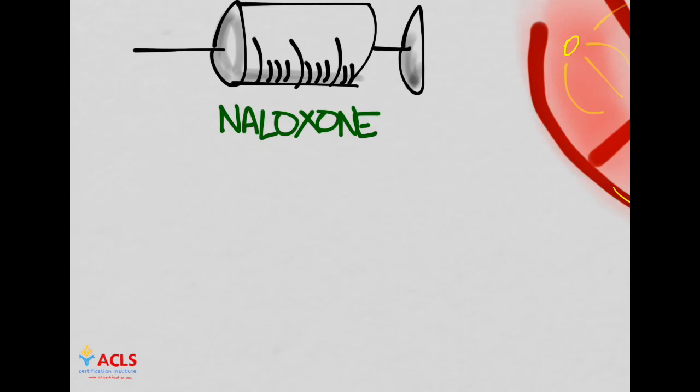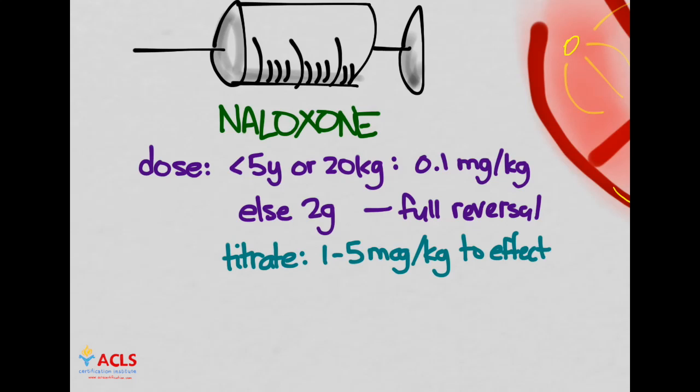The dose is for kids less than 5 years of age or 20 kilograms: give 0.1 mg per kg. That will hopefully flood all their receptors and turn off the opiates for full reversal. In adults, sometimes we don't want full reversal to avoid precipitating withdrawal. In children, if needed, you can give 1 to 5 micrograms per kg and titrate to effect.